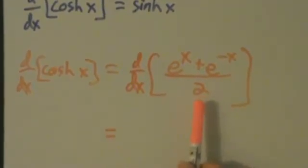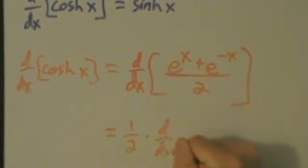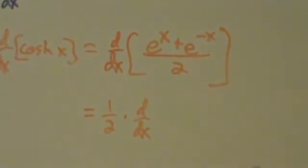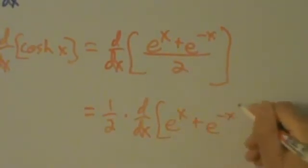So dividing everything by 2 means we're multiplying everything by a half. Let's just pull the one half out because it's just a constant. Remember, constants can be pulled out of derivatives. So what we have now is one half times d/dx of e to the x plus e to the negative x.